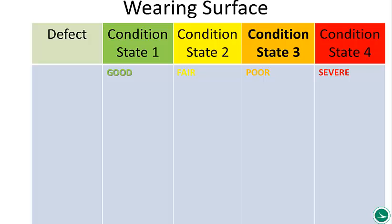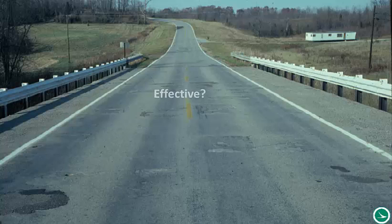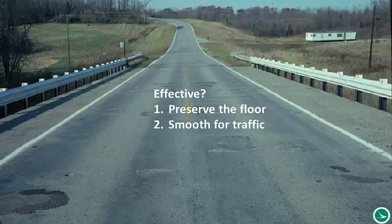Going back to our chart, we have stratification from left to right. The national guidance from AASHTO is based on whether the wearing surface is effective. Effectiveness has a lot to do with what's underneath that wearing course. Wearing surface fulfills two primary roles: it preserves what's underneath and it provides a smooth riding surface. So preservation and rideability are the two functions of the wearing surface.